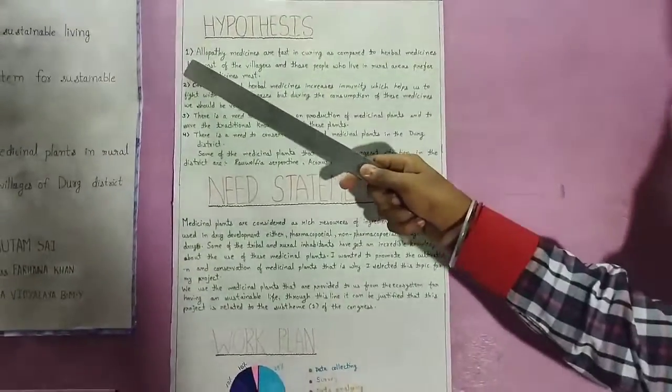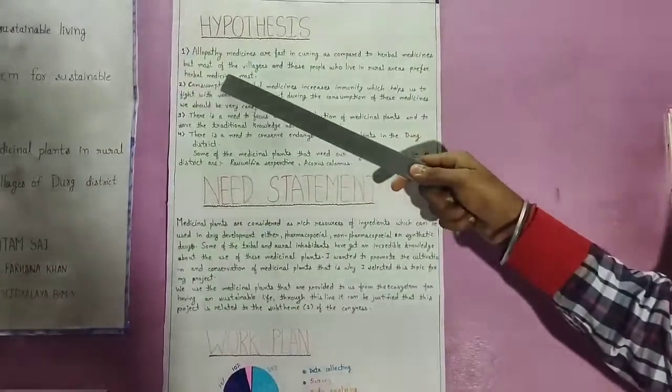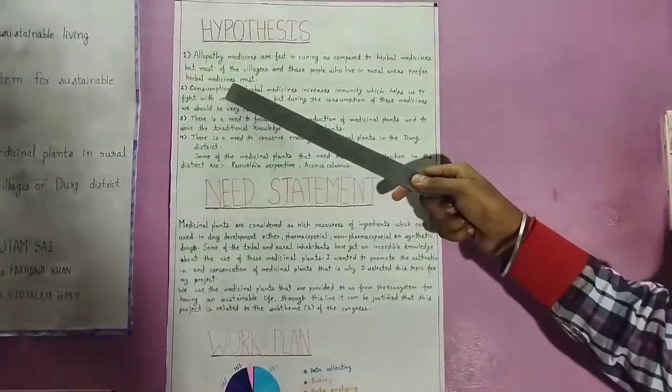Hypothesis 1: Allopathy medicines are fast in curing as compared to herbal medicines, but most of the villagers and those people who live in rural areas prefer herbal medicines most.